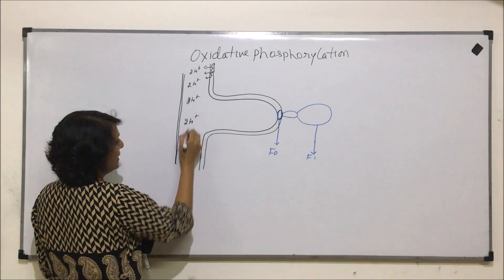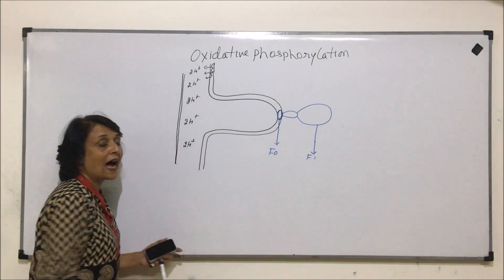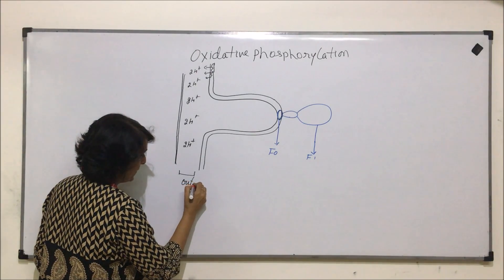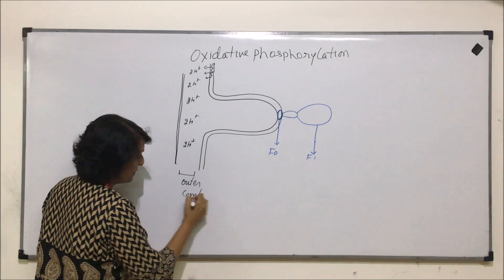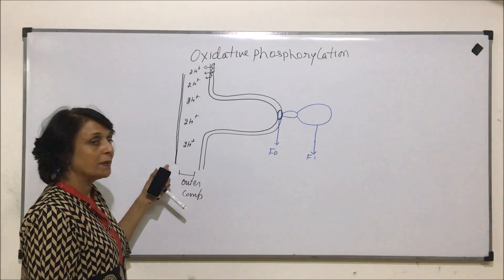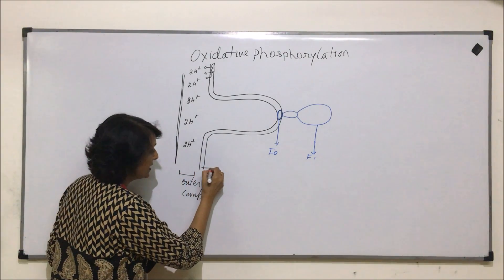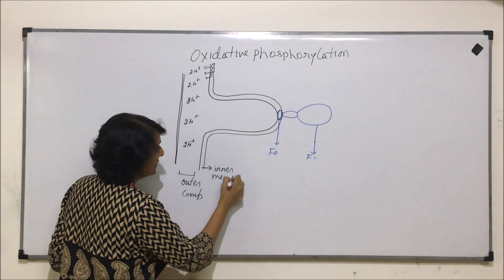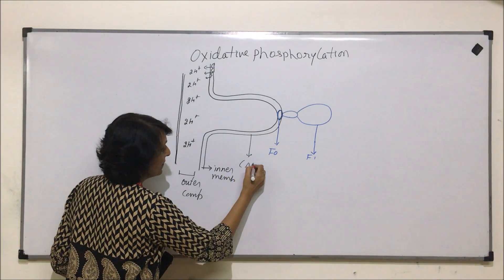every time a pair of protons was pumped in. So this outer compartment has high concentration of protons, outer compartment or the intermembrane space, and this is the inner membrane and this structure which we have seen is the crista.